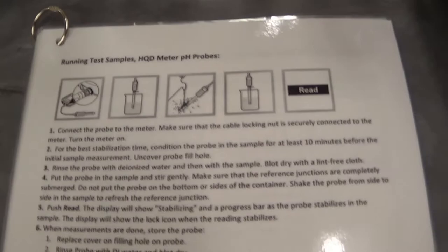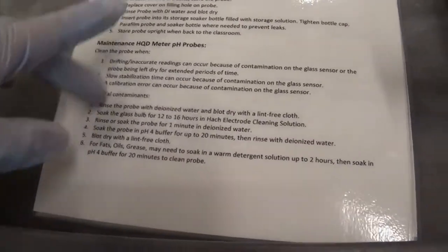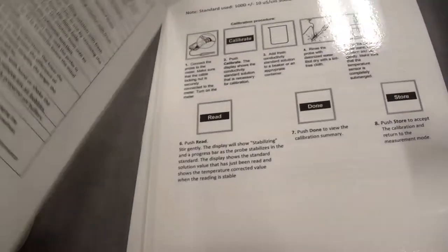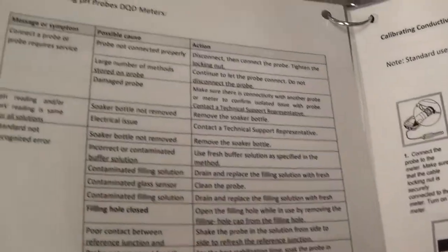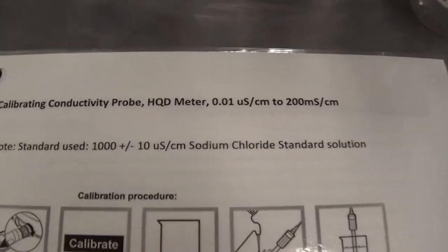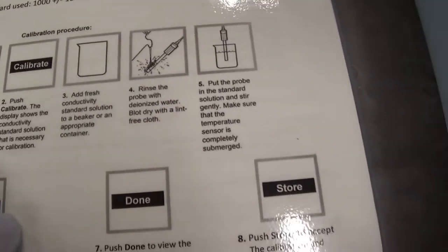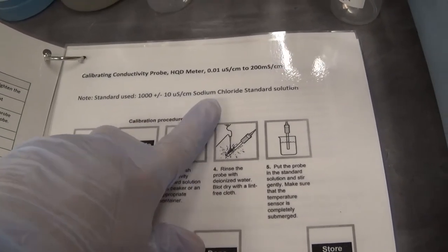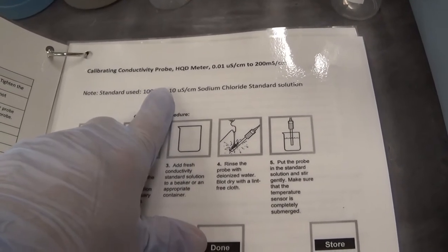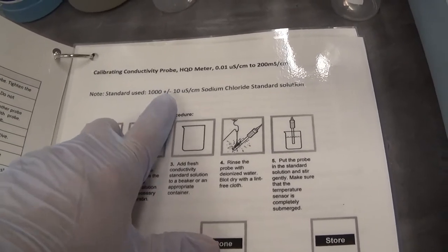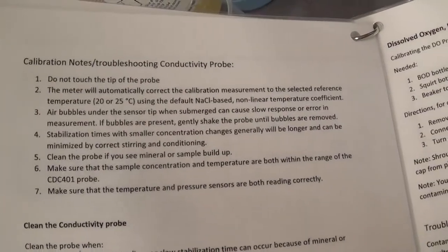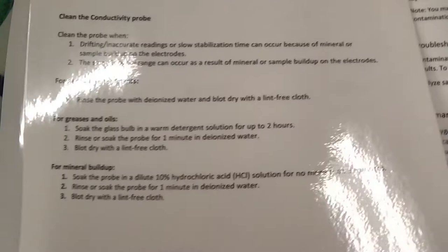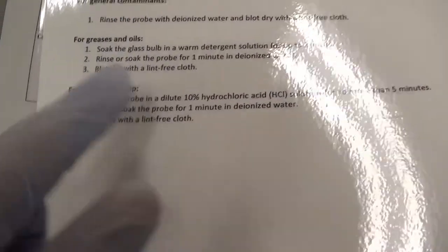Running your test samples for pH and a little bit of maintenance in case there is some trouble, and more troubleshooting problems. Calibrating the conductivity probe with its directions. Our conductivity probe uses 1000 standard and only one standard for these meters. And then notes, troubleshooting, cleaning, that kind of thing.